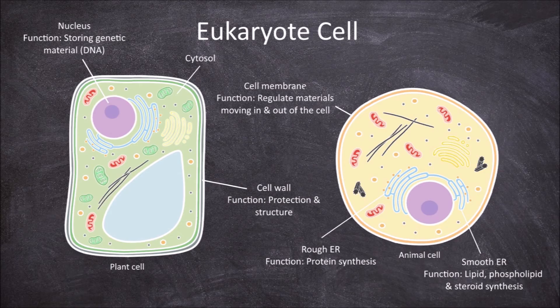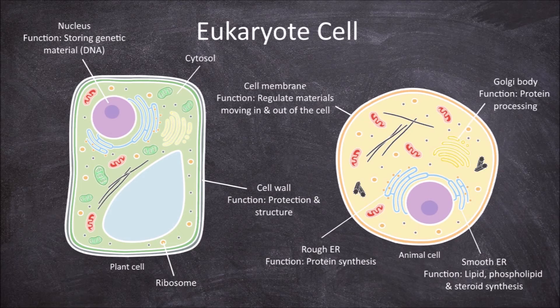Ribosomes can be found within the cell, both attached to the rough endoplasmic reticulum, but are also found free within the cell. There is also the Golgi body. The function of the Golgi body is in protein processing.